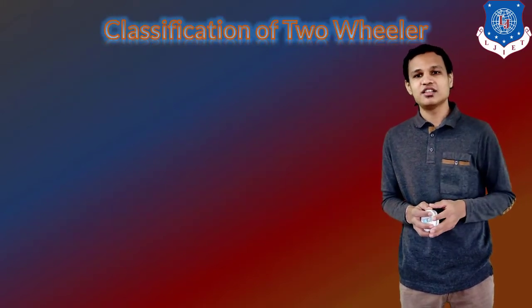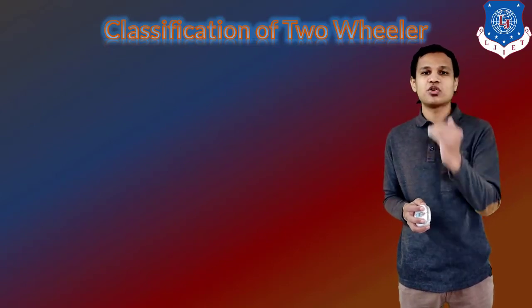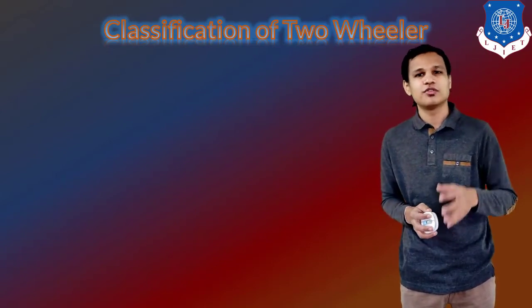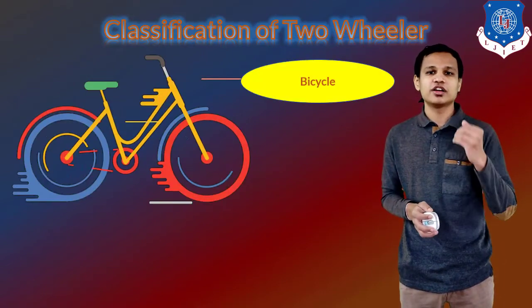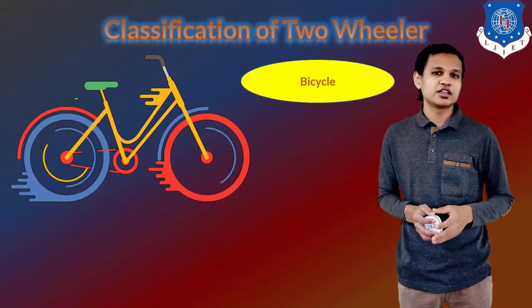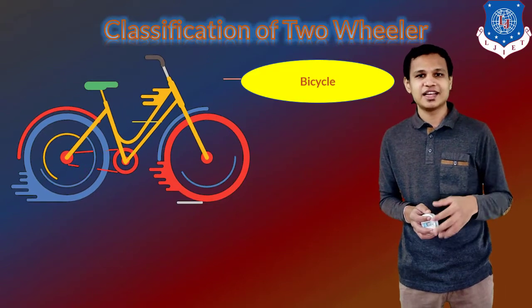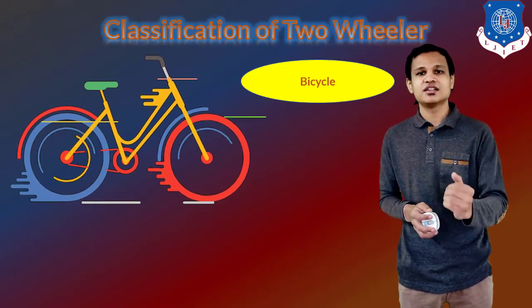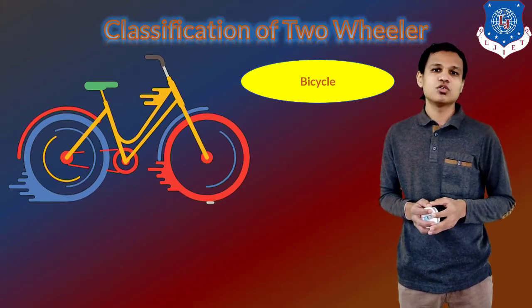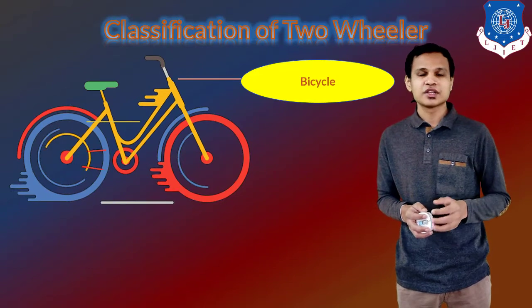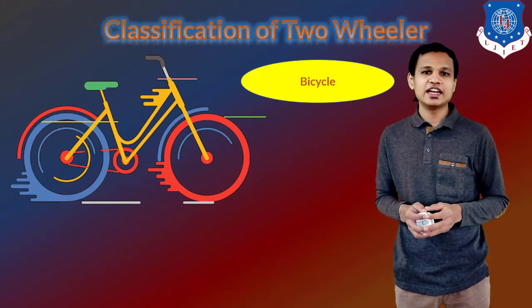Now let's see the classification of the two-wheeler. There are mainly three to four main types of two-wheelers, with further sub-classifications. For the two-wheeler, the first is the bicycle — the first innovation — which we still use for shorter distances and which only works on manpower. No petrol or diesel is used. Nowadays it is also used again as an eco-friendly vehicle.